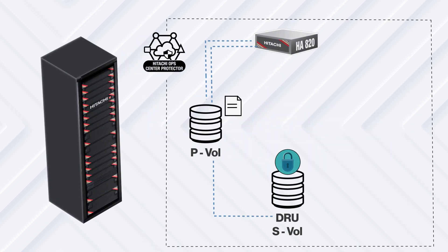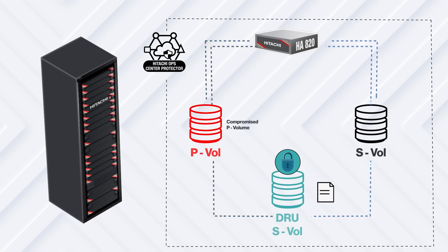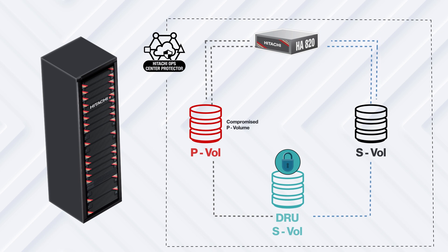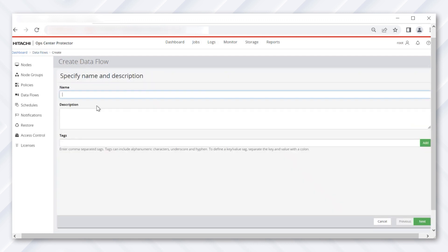Let's begin by creating a level one shadow image pair with DRU enabled on the SVol, then we'll create a level two shadow image pair that we can use to restore the data in the unlikely scenario that the PVol is compromised. First, let's back up our production volume by enabling DRU with the full protect attribute on a shadow image pair. Click 'New Data Flow,' give it a name, and then click Next.